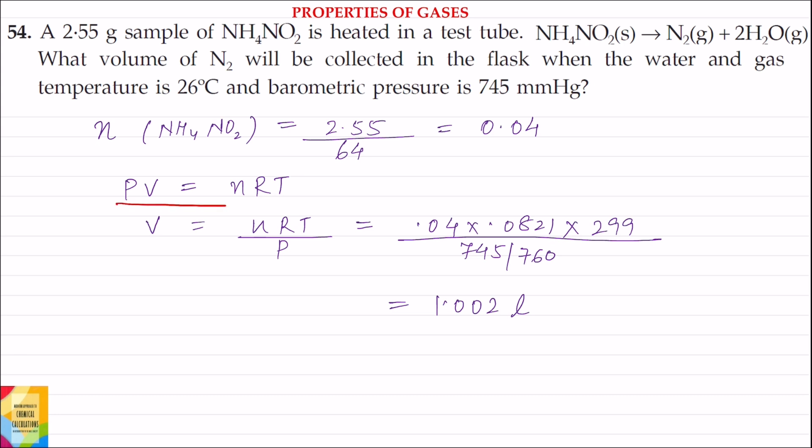Now the formula applied will be PV is equal to nRT. P is the pressure, V is the volume, R is the gas constant, T is the temperature and n is the number of moles.